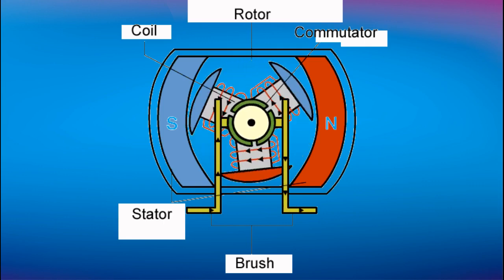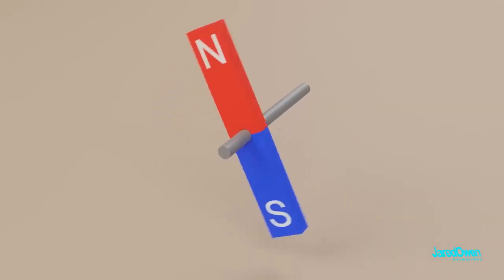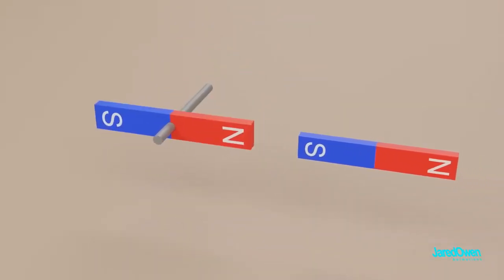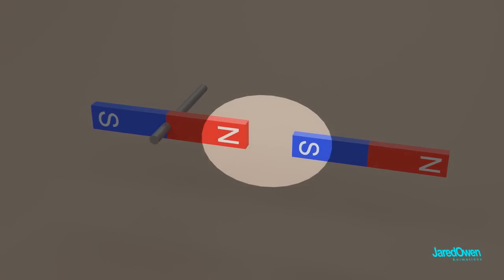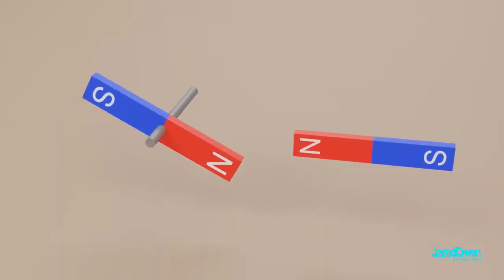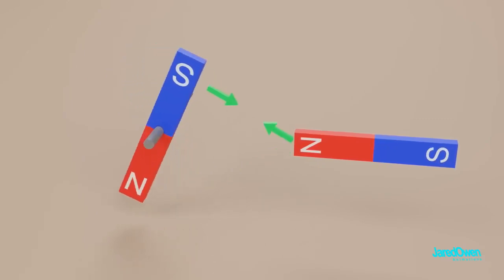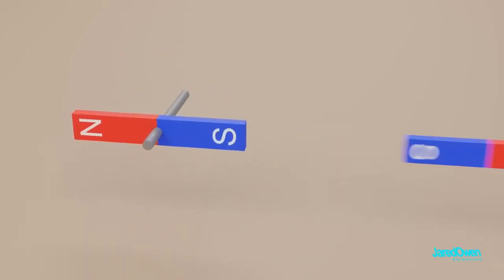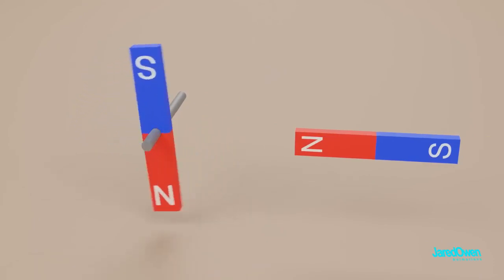When DC power is sent through the rotor, it creates a temporary electromagnetic field that interacts with the permanent magnetic field of the stator. The commutator's job is to keep the polarity of the field flipping, which keeps the rotor rotating. This creates the torque needed to produce mechanical power.